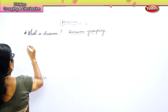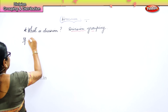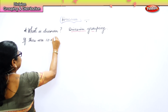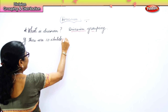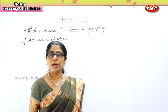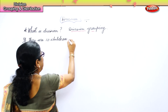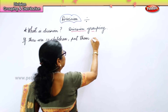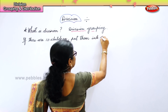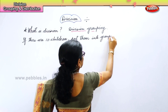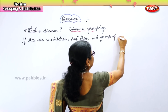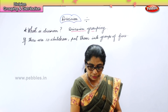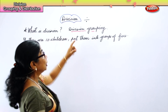Let's say, if there are ten children, put them into groups of five. That is what we are going to do. We said division is grouping.